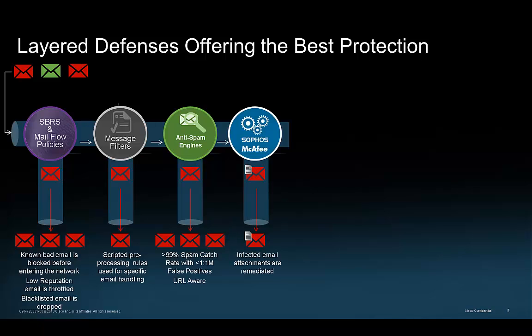To catch known bad code in attachments, we offer two different antivirus engines — McAfee and Sophos. You can run them both in tandem to further improve catch rates.